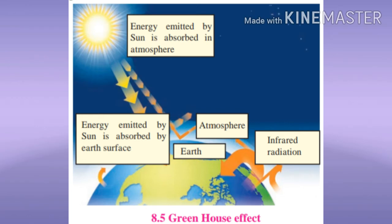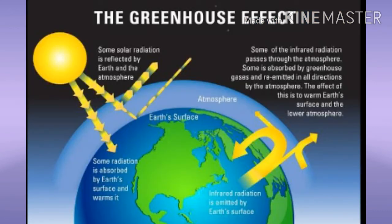Greenhouse effect and global warming. Though carbon dioxide is present in very less quantity in the atmosphere, it plays a very important role in the absorption of solar heat. Over the last 100 years, the proportion of carbon dioxide has increased due to industrialization. The effect of this carbon dioxide on earth's temperature is nothing but the greenhouse effect, and global temperature is gradually increasing as a result.